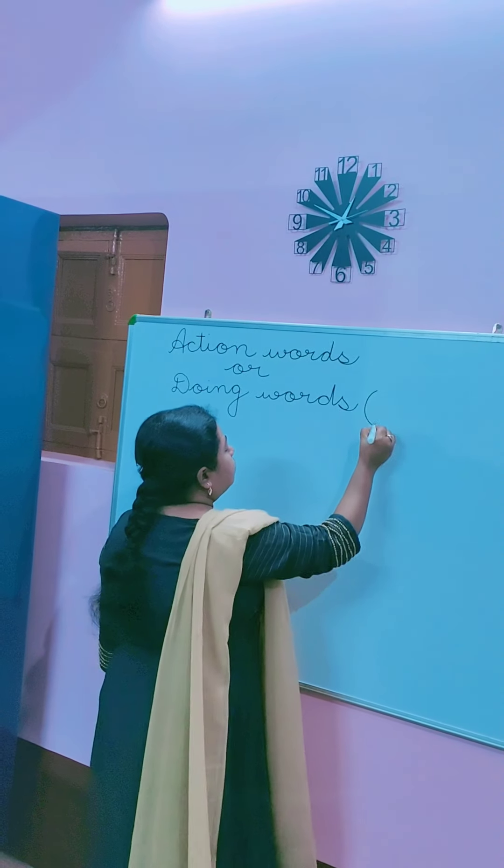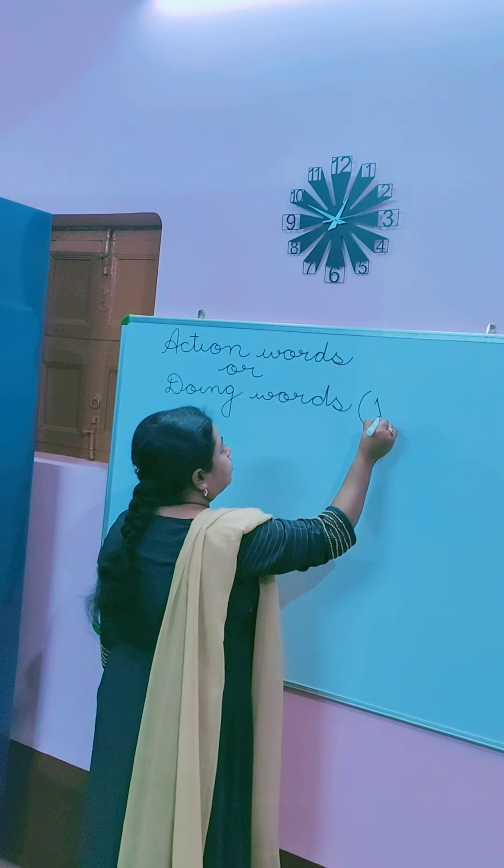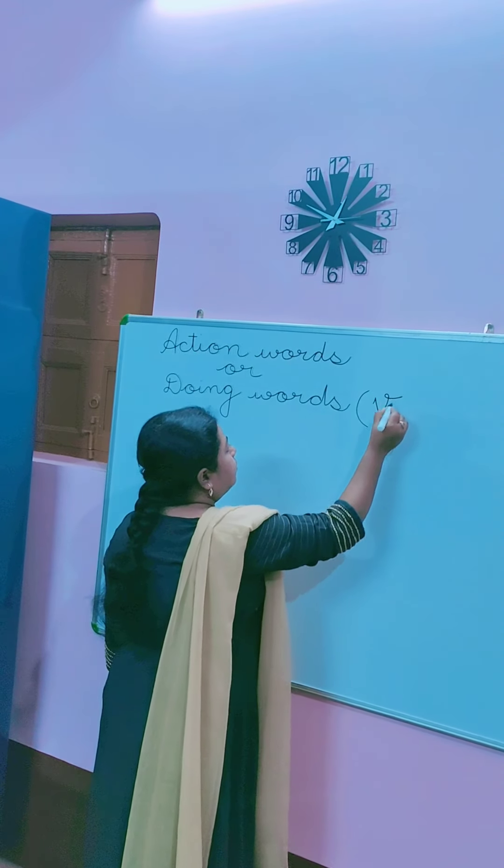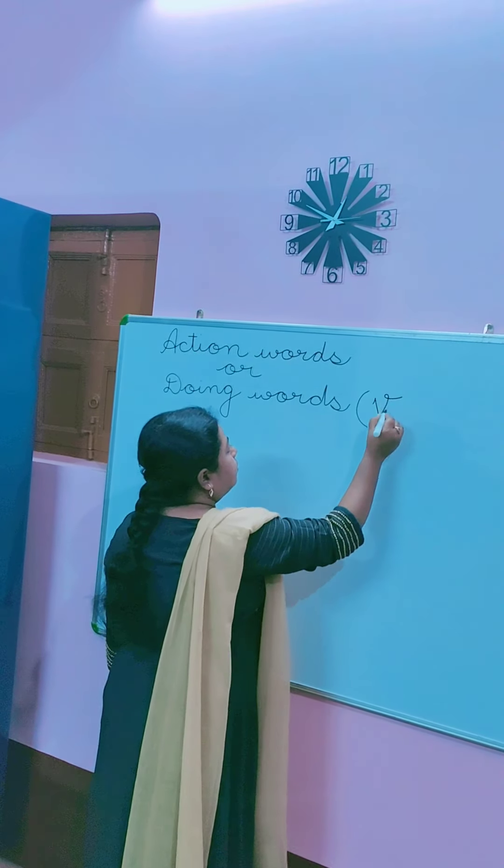Also known as Verbs — V-E-R-B-S. Children, I will explain Action Words or Doing Words with a few examples.